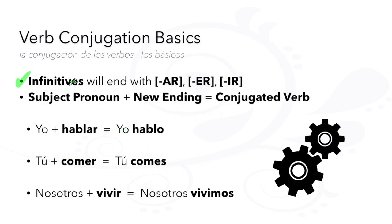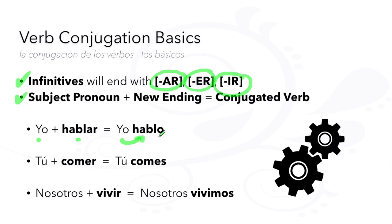Again, the infinitive form will end with AR, ER, or IR, but conjugation includes a subject pronoun and a new ending. For example: yo hablar becomes yo hablo with a new ending. Tú, comer becomes tú comes. Nosotros, vivir becomes nosotros vivimos.